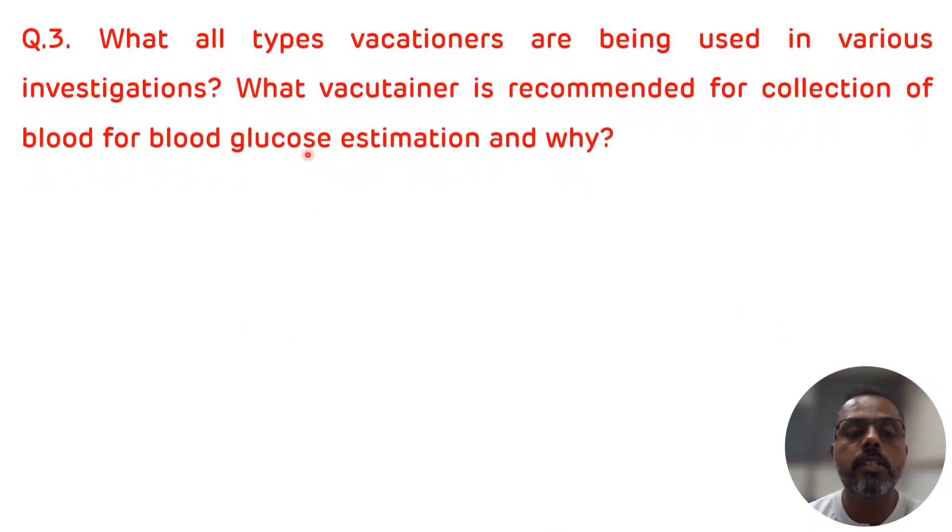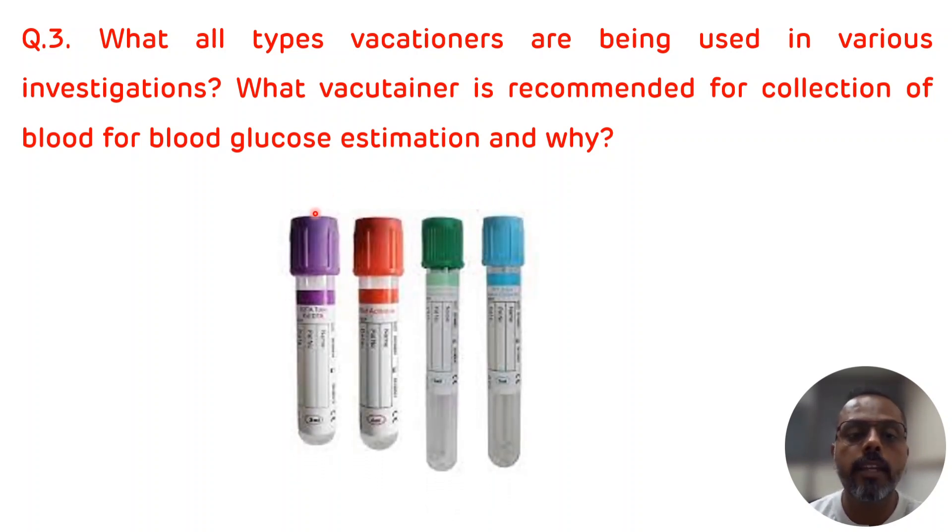Third question is: what all types of vacutainers are being used in various investigations? What vacutainer is recommended for collection of blood for blood glucose estimation and why? This is the picture showing the various types of vacutainers which are used in a clinical laboratory for various investigations.